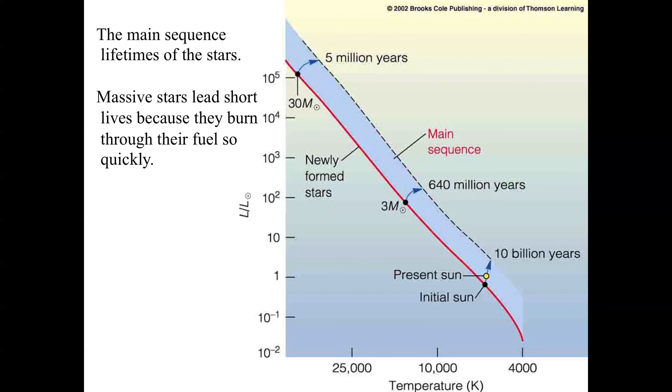Massive stars lead short lives because they burn through their fuel so quickly. The luminosity increases very rapidly as you go up the main sequence, much more rapidly than the mass. So the amount of fuel compared to the burn rate goes down as you go to higher and higher mass, leading to shorter and shorter lifetimes for hydrogen burning. When you get to stars that are about 30 solar masses, their main sequence lifetimes are only about 5 million years.